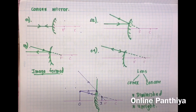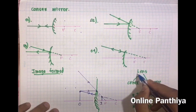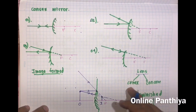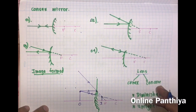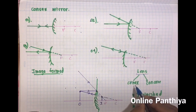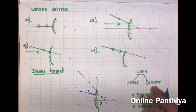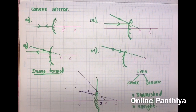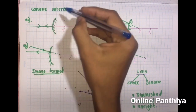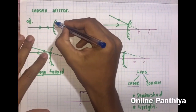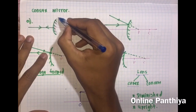Before starting the convex mirror, here is something important to remember: for lenses we had many diagrams for the convex lens and just one for the concave lens. For mirrors it is the opposite — there are many diagrams for the concave mirror, which we just covered as six diagrams, and only one diagram for the convex mirror.